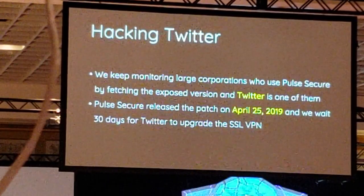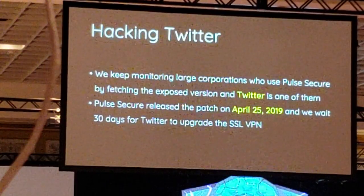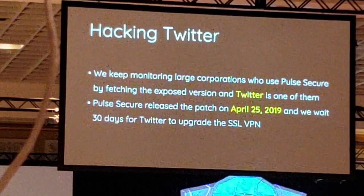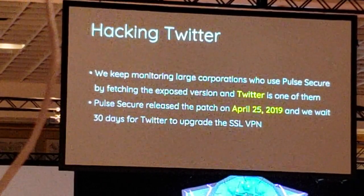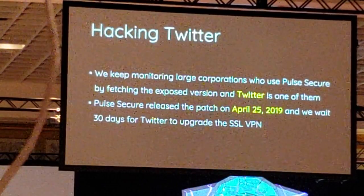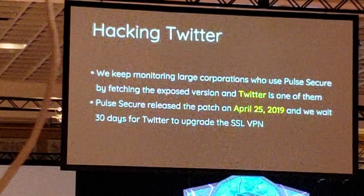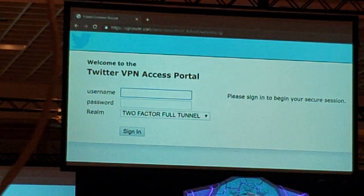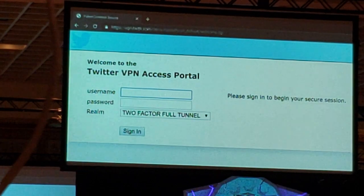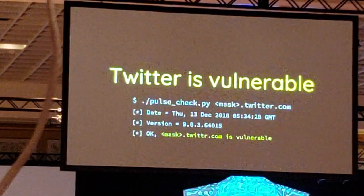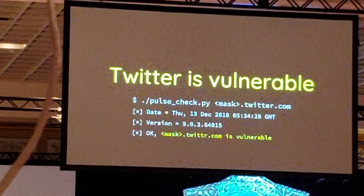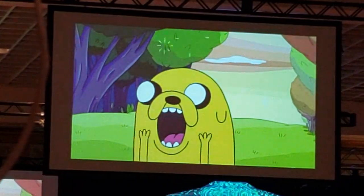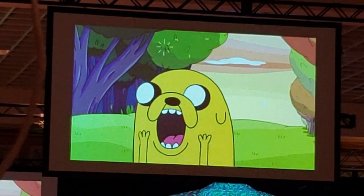After PulseSecure released all the patches, we kept monitoring the internet to see large corporations' response times. Twitter was one of them. They are known for their bug bounty program. However, it's not good to exploit a vulnerability right after a patch release, so we waited 30 days for Twitter to upgrade their SSL VPN. This is the Twitter SSL VPN — it looks like a simple login page. From reconnaissance, we knew the last time Twitter upgraded was the previous December. So Twitter was likely vulnerable.